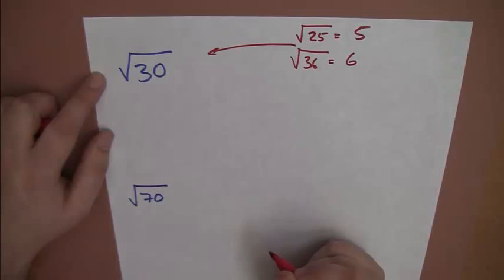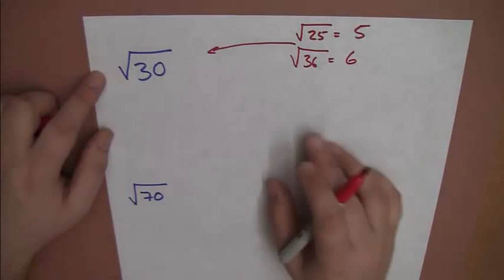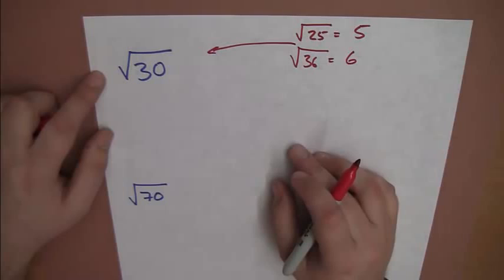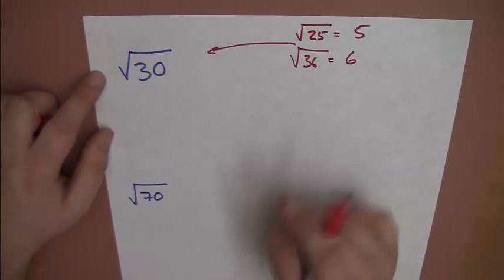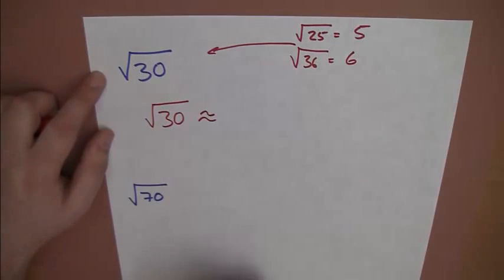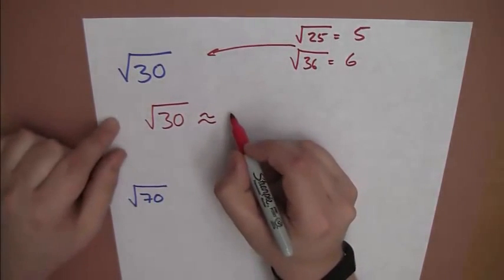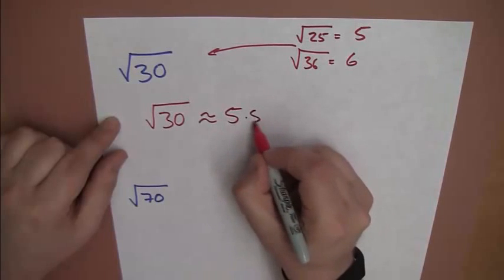And, looking at roughly its placement, it's halfway, 30 is halfway between 25 and 36. Which means, our answer to the square root of 30 is roughly, now I'm using the approximate equal sign, because I know I'm not exact here.